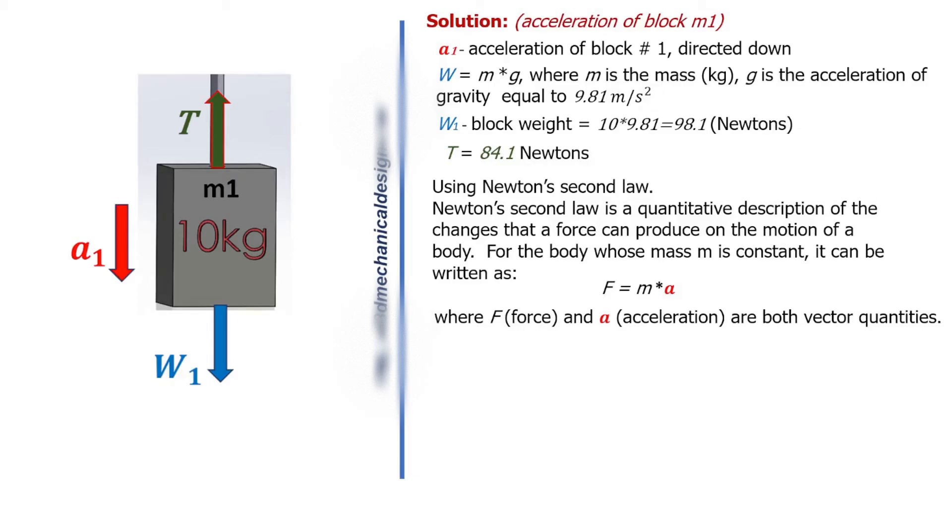F equals M times A. F equals W1 minus T, so M times A equals W1 minus T.